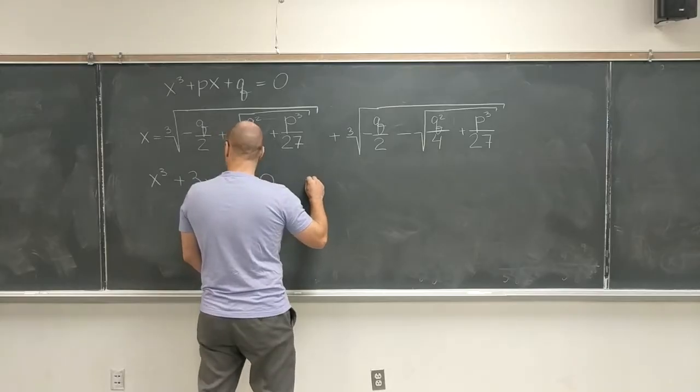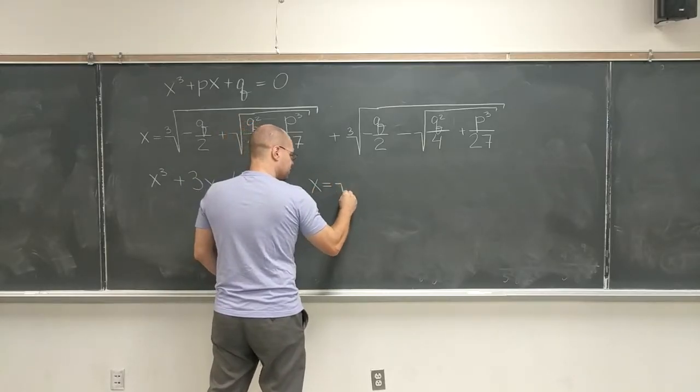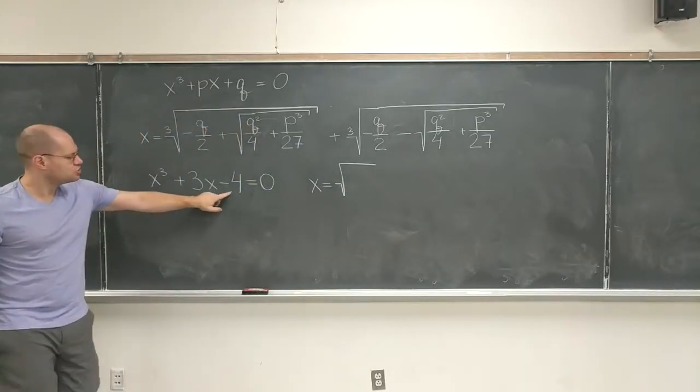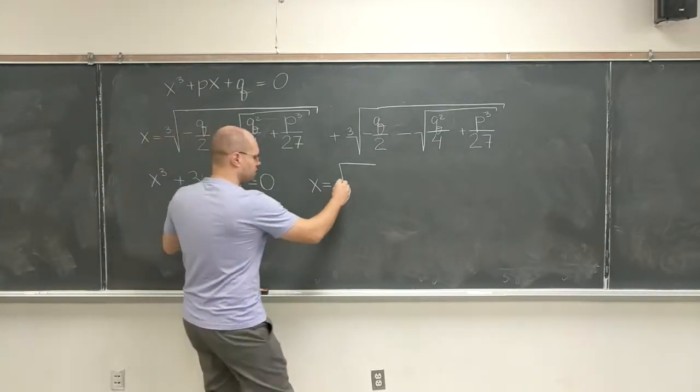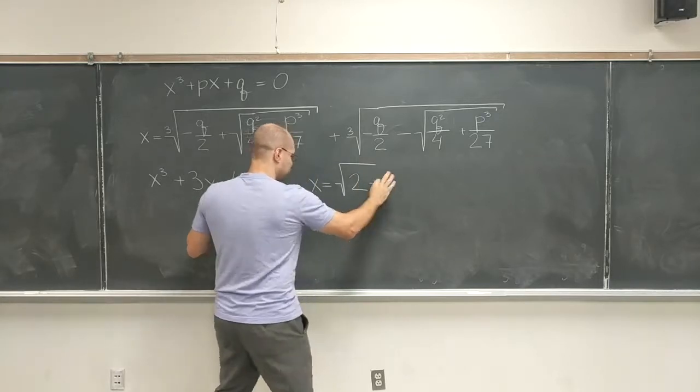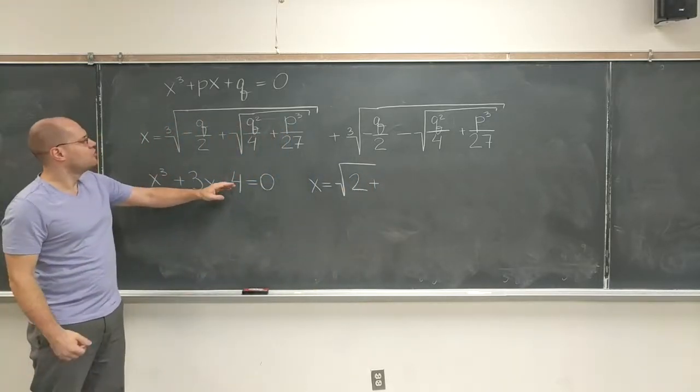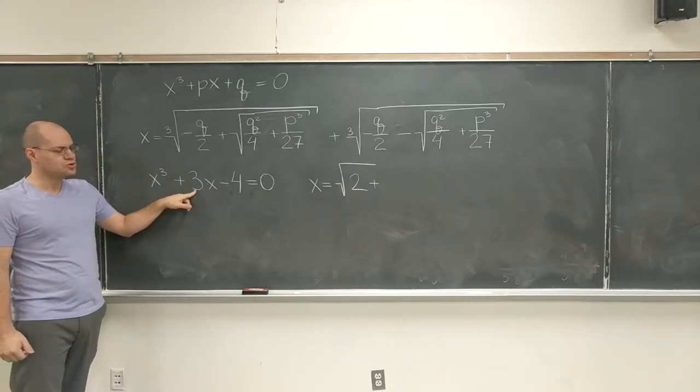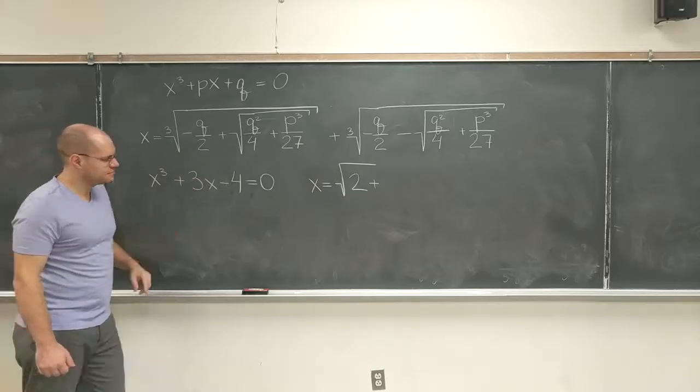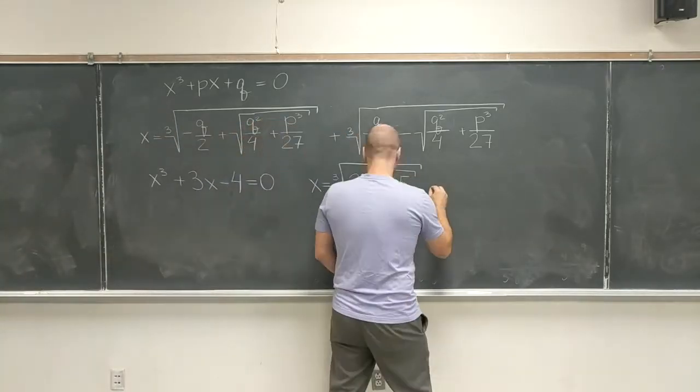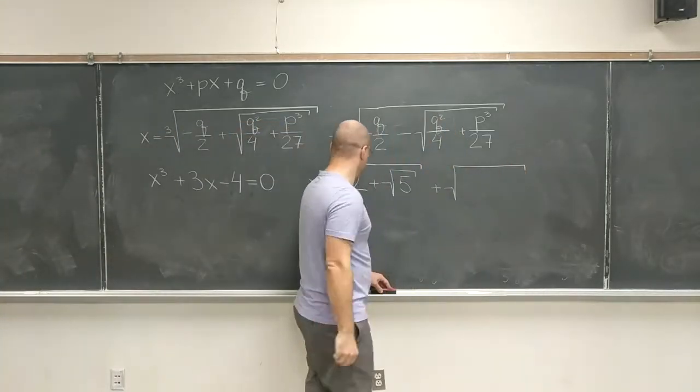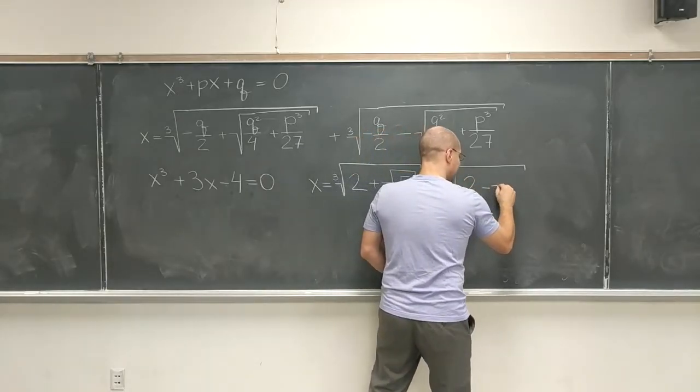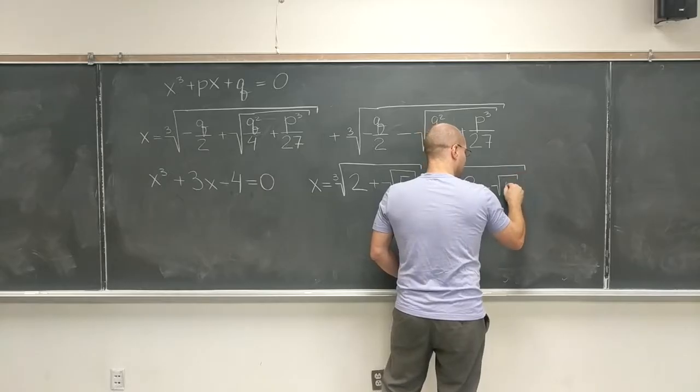We have x equals cube root - these are such small numbers this will be a pleasure. 2 plus, we'll just figure out what that square root is, 4 plus 1, so 2 plus square root of 5. So the other term is we'll have 2 minus square root of 5.